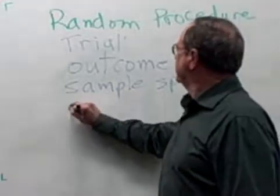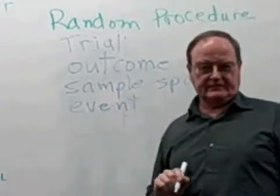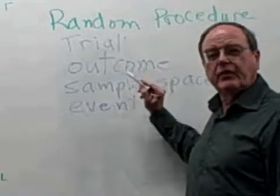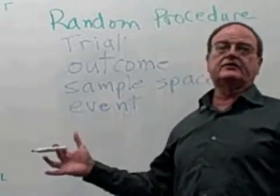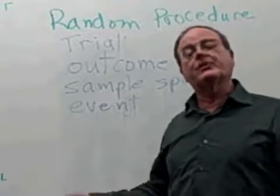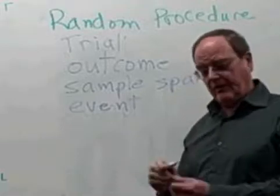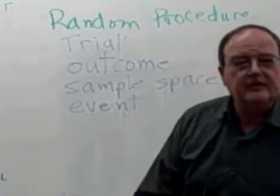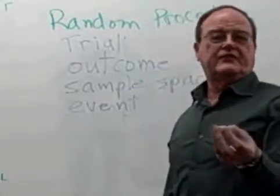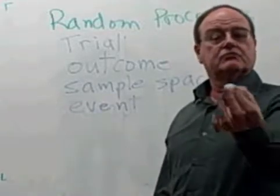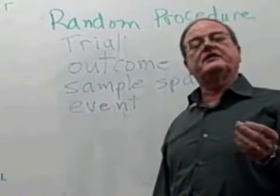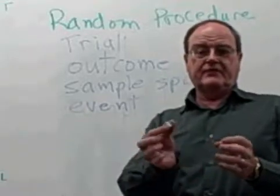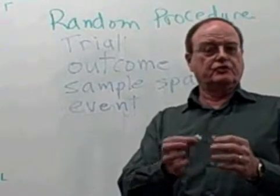Next is an 'event.' An event is one or more outcomes that we are particularly interested in — that is, we want to know what the probability of it happening is. An event may be one outcome or a combination of outcomes. For the die, I can define the event as rolling a five, or I can define my event as rolling an even number — in which case my event is made up of the outcomes two, four, and six.